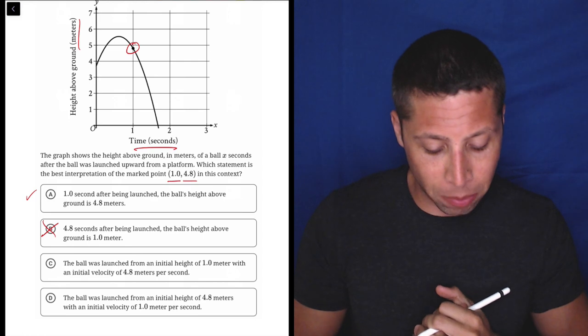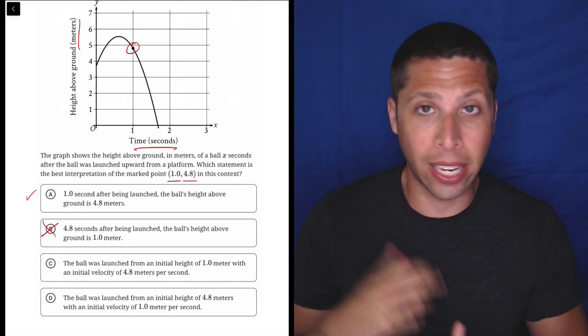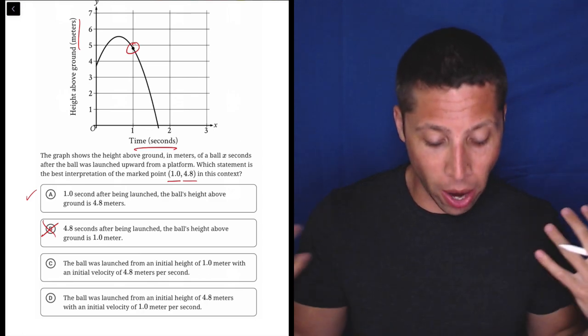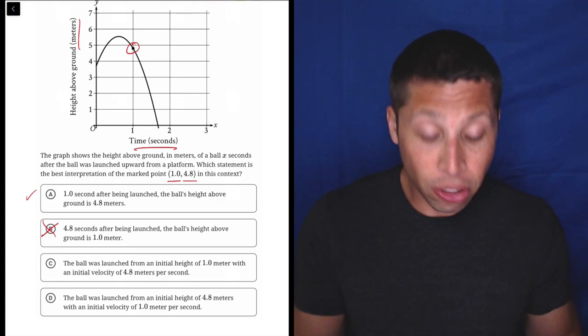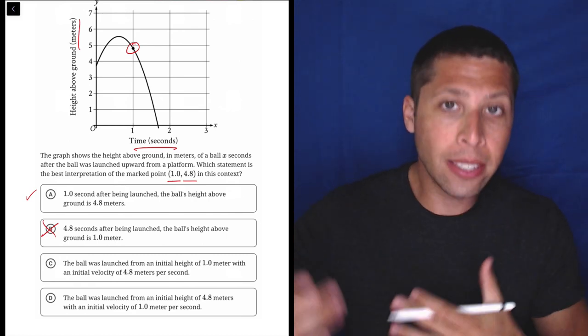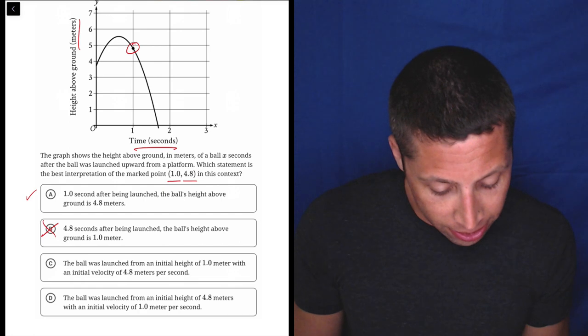Choice C, the ball was launched from an initial height of one meter with an initial velocity of 4.8 meters per second. Why are we adding complexity? Why do we know the initial velocity? That's not part of the story at all.